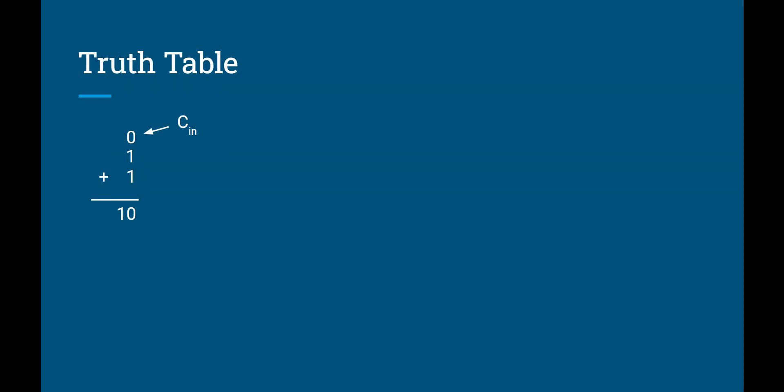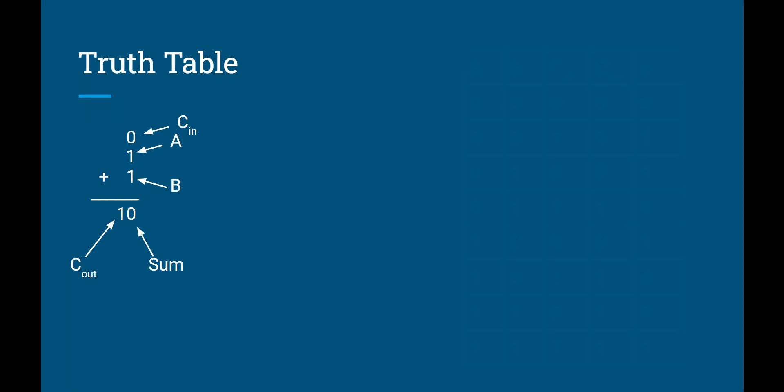So we've already identified our carry in. We have input A. We have input B. We have our carry out. And we have our sum. So recognize the sum is in the same column as our inputs. And our carry out moves over to the next column. And if we wanted to produce a truth table for this, we already did all the math on the previous two slides. Our truth table would look like this.